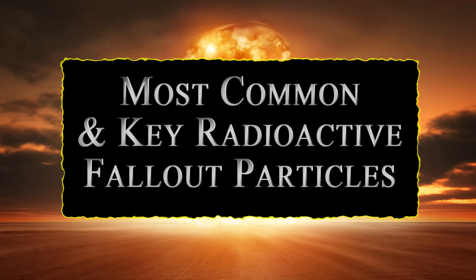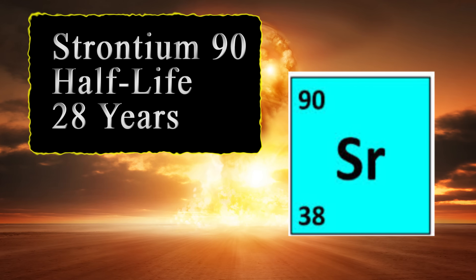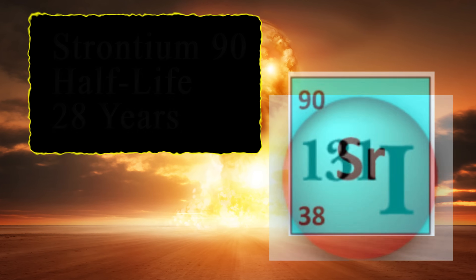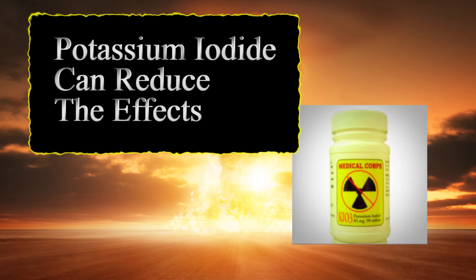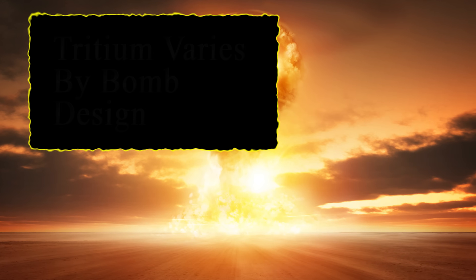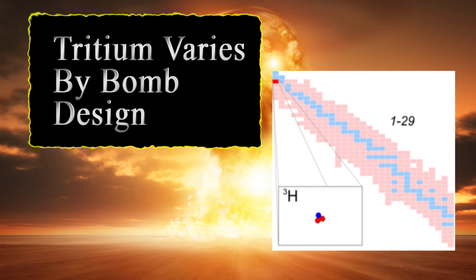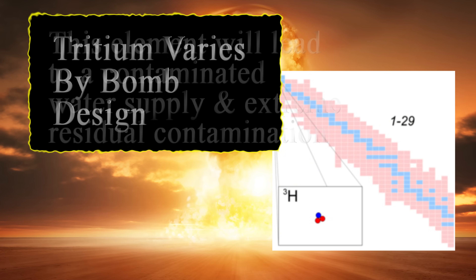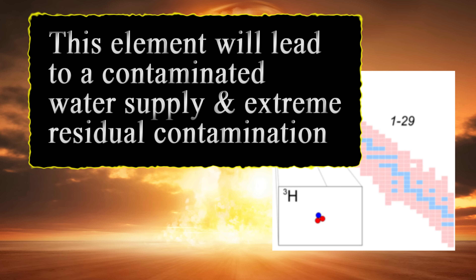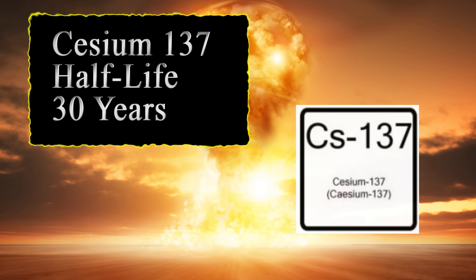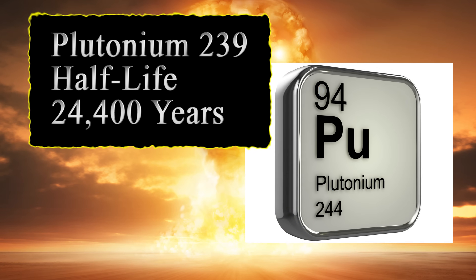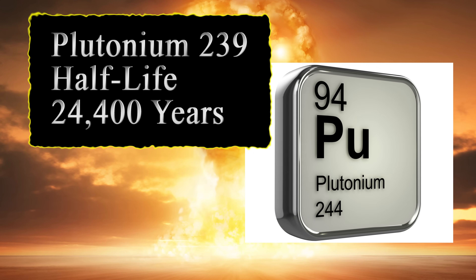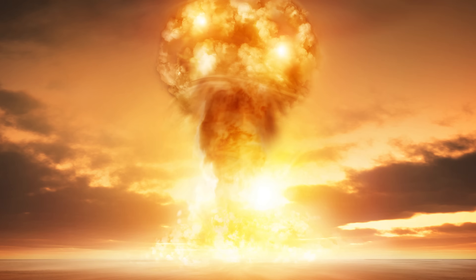Many fallout particles are especially hazardous biologically. Some of the principal radioactive elements are as follows. Strontium-90 is very long-lived with a half-life of 28 years. Iodine-131 has a half-life of 8.1 days, and taking potassium iodide can help reduce its effects. The amount of tritium released varies by bomb design; it has a half-life of 12.3 years and can be easily ingested since it can replace hydrogen in many water sources. Cesium-137 has a half-life of 30 years. When a plutonium weapon is exploded, not all of the plutonium is fissioned — plutonium-239 has a half-life of 24,400 years.